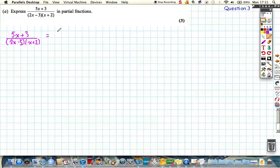Because they're distinct linear factors, we can write in the form A over the first factor plus B over the second factor. And our job is to find out what A and B are.